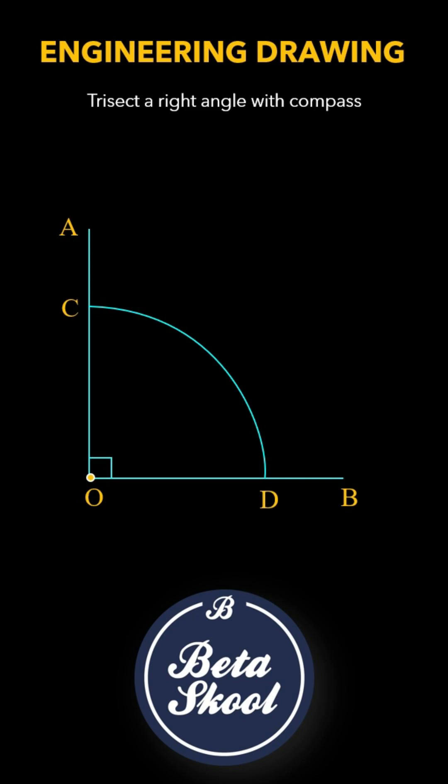Keeping the same radius, shift the compass pointer to location C and cut the arc CD with an arc at E.